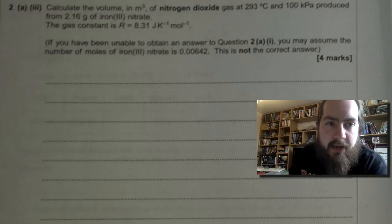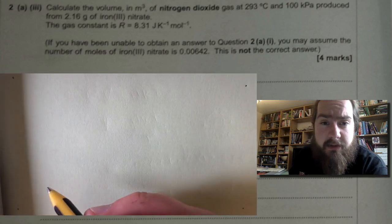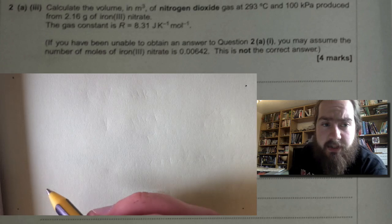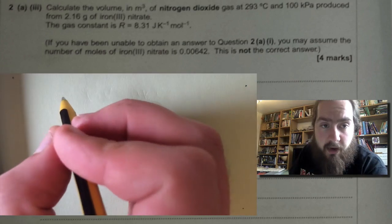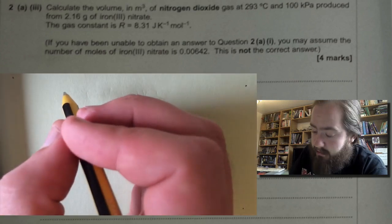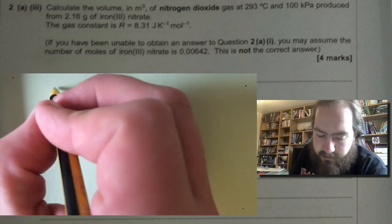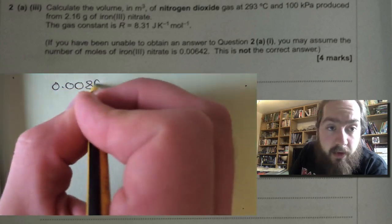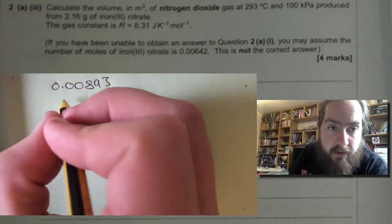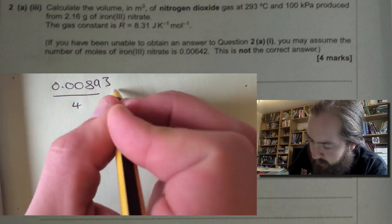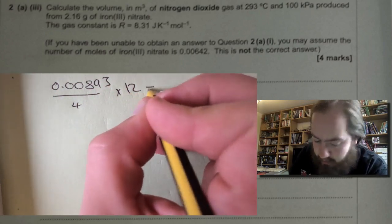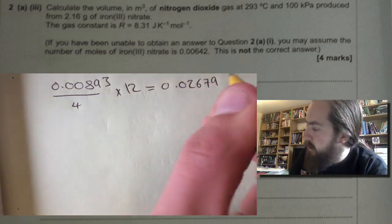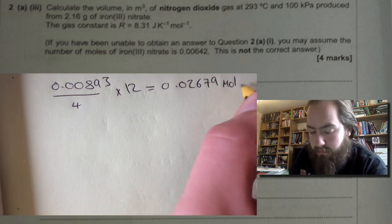2A part three. Calculate the volume in meters cubed of nitrogen dioxide gas at 293 degrees Celsius and 100 kilopascals produced from 2.16 grams of iron nitrate. So first thing we need to do is work out the number of moles of nitrogen dioxide produced, and we can use the same thing we did for the last question. So we take our number of moles of iron nitrate, divide that by four, times that by 12 from the formula, and that will give us 0.02679 moles of NO2.